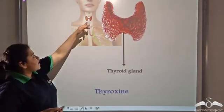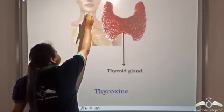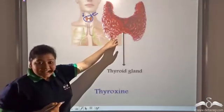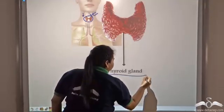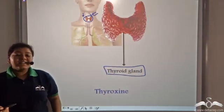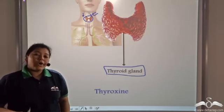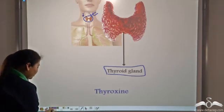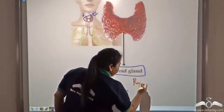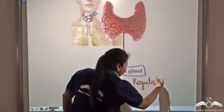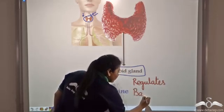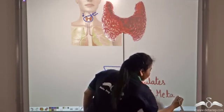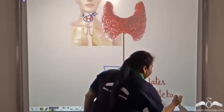There is a butterfly-shaped gland present just below the larynx — this is the larynx, and it is butterfly-shaped. This gland in the body is known as the thyroid gland. The thyroid gland is an endocrine gland, so it secretes a hormone known as thyroxine. Thyroxine helps in regulating the basal metabolism — that is, the minimum amount of energy required to carry out the life processes such as the heart beating or the inhalation and exhalation in the lungs.